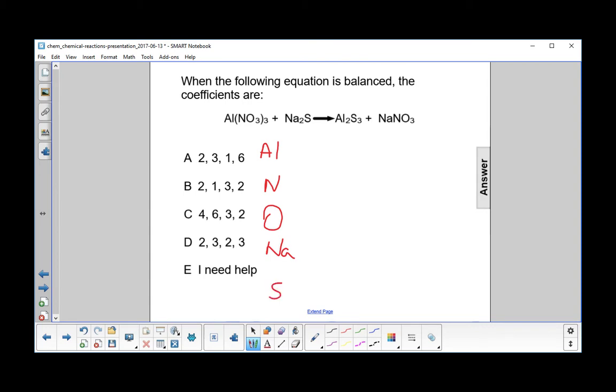And we write down how many are on each side. So we have one aluminum, three nitrogen, 9, 2, 1. And note how we have three nitrogens on the left side. You only see one, but you have this three here that you have to multiply it by. So those are the reactants.